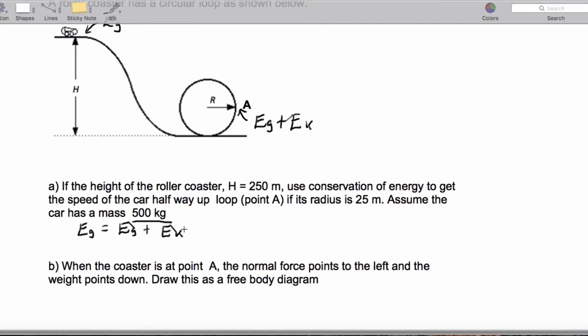And when we throw the numbers in there, that's going to be M times G times H equals M times G. Now the height of the roller coaster car at A is simply the radius of the loop, and we have a kinetic energy term as well.